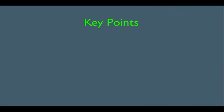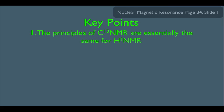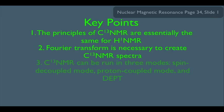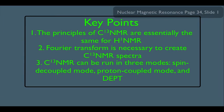So what have we learned here? What's it all about? Key points. Number one, we saw the principles of carbon-13 NMR are essentially the same for HNMR. We also saw that a Fourier transform is necessary to create a CNMR spectra. And we also saw number three, that CNMR can be run in three modes: spin-decoupled mode, proton-decoupled mode, and DEPT mode.